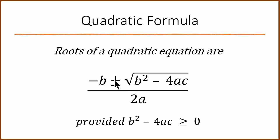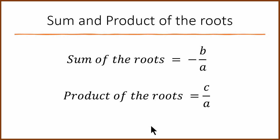If you use plus, you get one root; if you use minus, you get the other root — provided b squared minus 4ac is greater than or equal to 0. Using this formula, we can show that the sum of the two roots is minus b by a, and the product of the two roots is c by a.